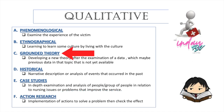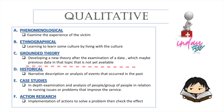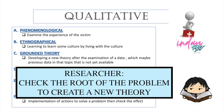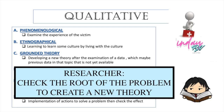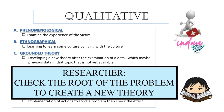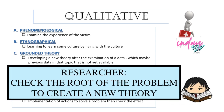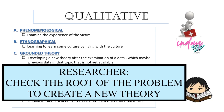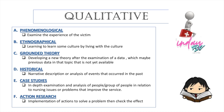The next one is Grounded Theory. Here in grounded theory, the researcher is going to develop a new theory after the examination of data, which may be previous data on a topic that is not yet available. The researcher describes and understands the key psychological and structural processes that occur in a social setting. The researcher checks the root of the problem and makes another theory based from the data in order to develop a new theory. We don't have a theory yet — we are going to have a theory based from the collected data. Usually, grounded theory is used in social sciences.